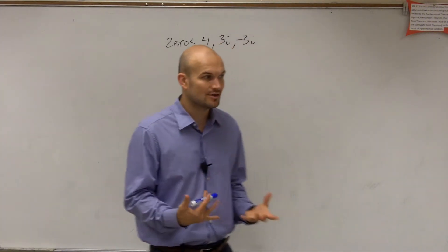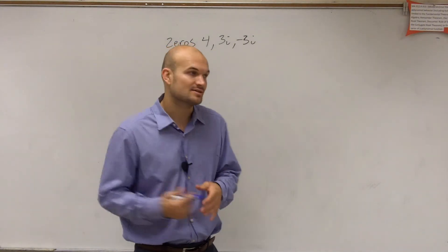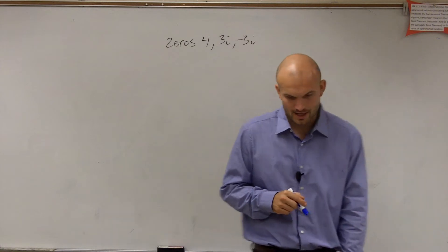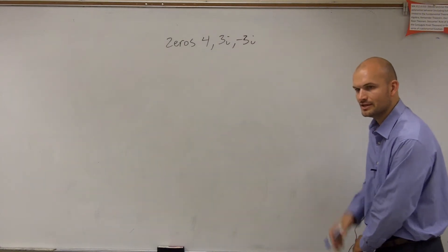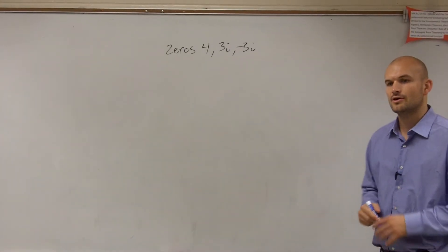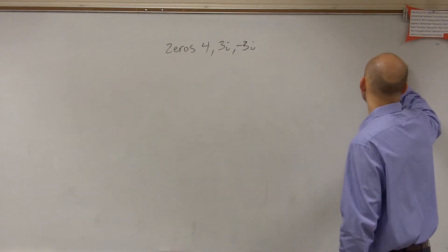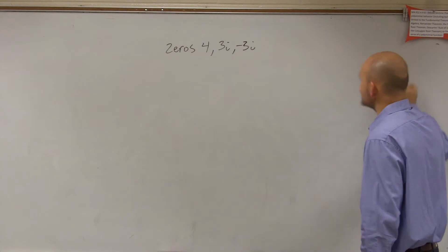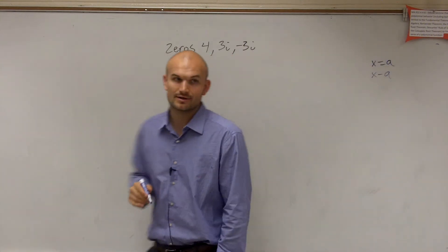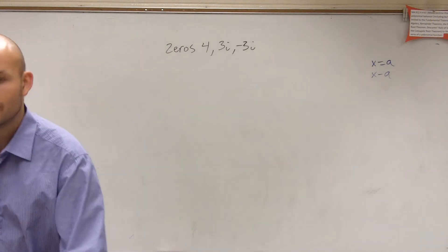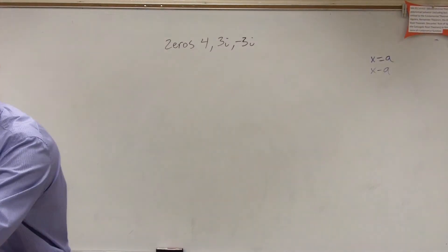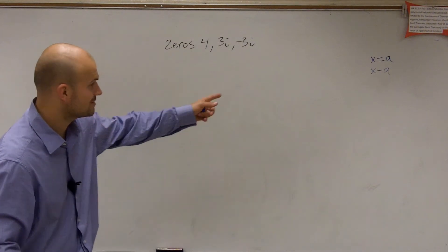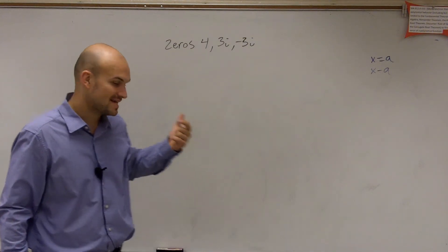So when given zeros, the first thing we need to do is write these as our factors. So there is a bit of information, if you guys remember, in your notes that we said if x equals a is a zero, then x minus a is a factor. That was in your notes, it was called the zeros of a polynomial. And pretty much all it states is if you have x equals a is a zero, then x minus a is a factor.